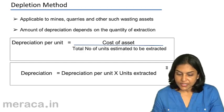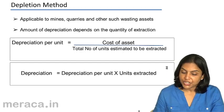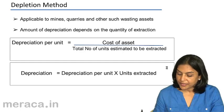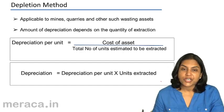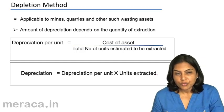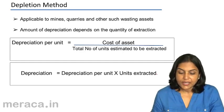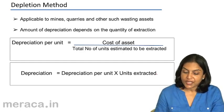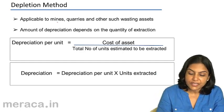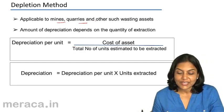We will now discuss another method — the depletion method — which again depends on the usage of the asset. The depletion method is largely used in the case of mines, quarries, and other wasting assets.